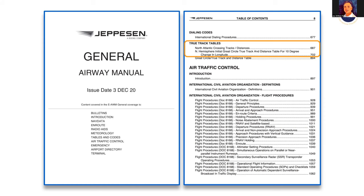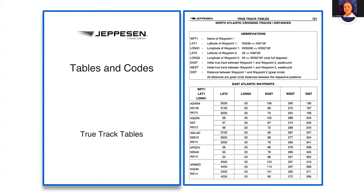The General Airway Manual has Northern Hemisphere Initial True Track and Distance Tables. This is the third method of accomplishing that third critical step — getting the mag course and distance. This is the one you can always fall back on if you have Jeppesen. There are other track and distance tables — at ATI we had tables that used mid-course. This one uses the initial true track, which I'll explain. But this is the resource because almost everybody here will have it available.